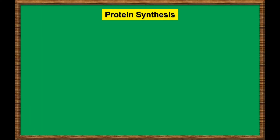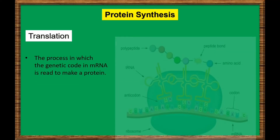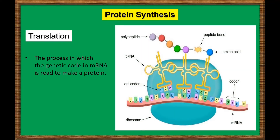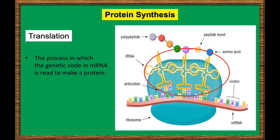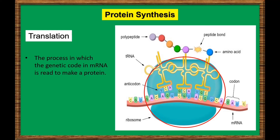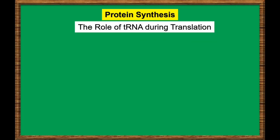The last stage of protein synthesis is translation. Translation is the process in which the genetic code in mRNA is read to make a protein. After mRNA leaves the nucleus, it moves to a ribosome, which consists of rRNA and proteins. The ribosome reads the sequence of codons in mRNA, and molecules of tRNA bring amino acids to the ribosome in the correct sequence. To understand the role of tRNA, you need to know more about its structure.